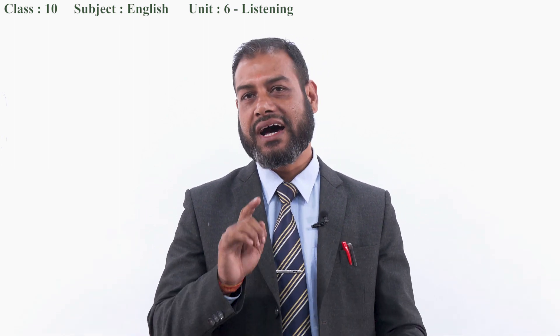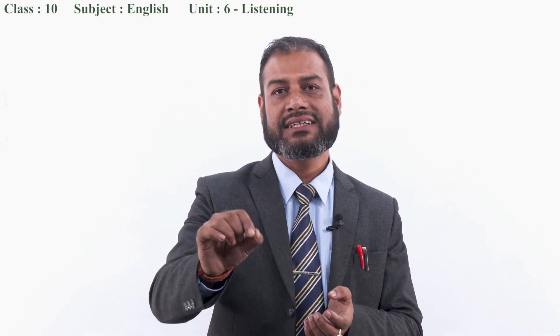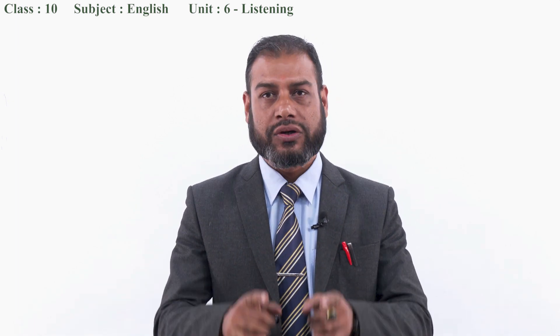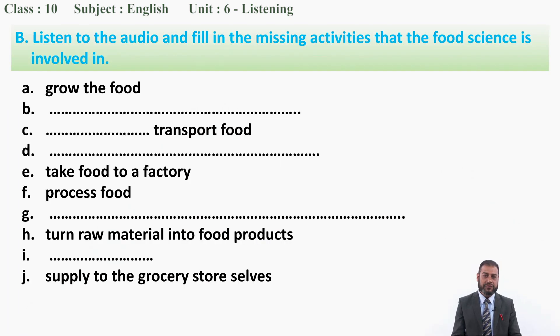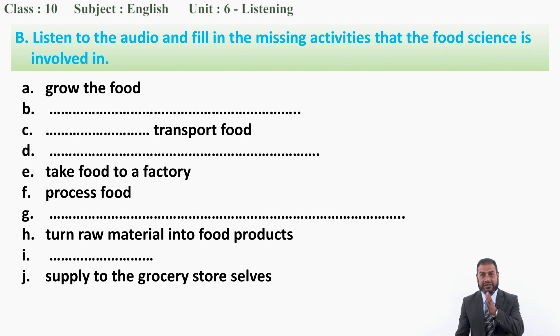Be ready with your pen or pencil. Your first task is given in B — read it once. The instruction says: listen to the audio and fill in the missing activities that food science is involved in. The first activity given is 'grow the food.'